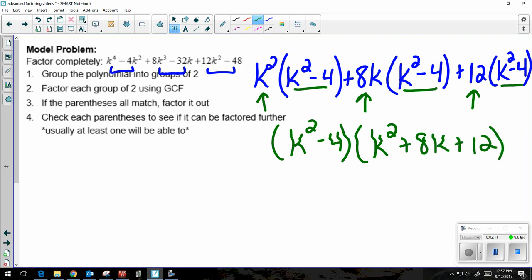And now you want to check that these two parentheses. Sometimes one of them can be factored further, both of them or none of them. So if I look at my first one, k squared minus 4, that's a difference of perfect squares, so that's going to become k plus 2 and k minus 2.